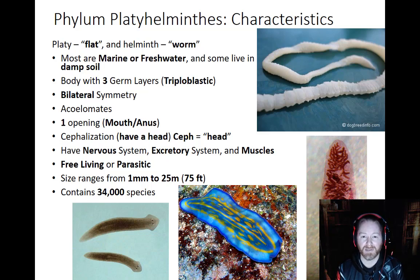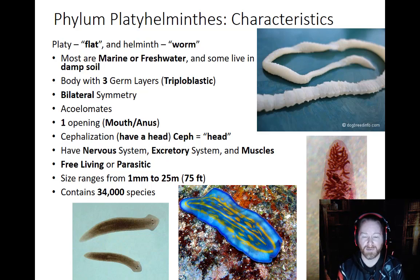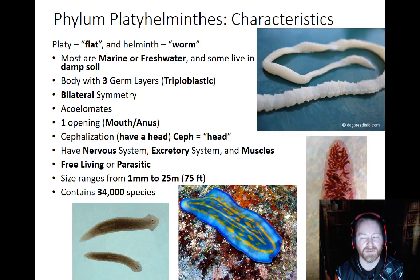If you remember, cnidarians were only diploblastic. They had an ectoderm and an endoderm, with mesoglia in between that was almost 95% water. Well, flatworms are going to have three separate layers.